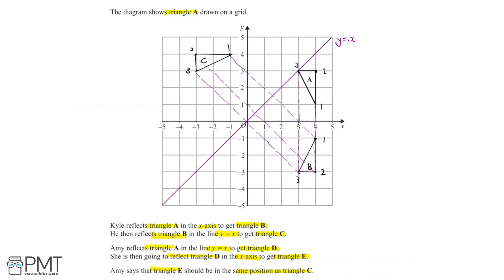Now let's do the reflections that Amy did. Amy reflected triangle A in the line y equals x to get triangle D. Point 3 on triangle A is already on y equals x, so we can leave it as it is. For point 2, we travel half a diagonal to get to y equals x, and do the same on the other side — placing point 2 over here. For point 1, it travels one and a half diagonals to the line, so doing the same on the other side gives us point 1. Joining the dots gives us triangle D.